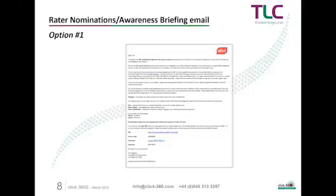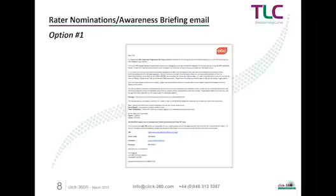Option one is an email designed to go to participants which invites them into the platform to nominate their raters. This email could potentially replace the need for you to run expensive and time-consuming physical awareness briefings, because it's embedded with three video links. Imagine this being read on a mobile device — everybody wants video now. They're slowly replacing text; people can't be bothered reading long pages of text.